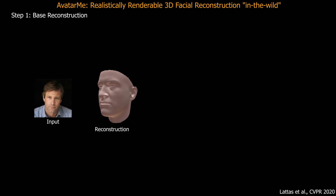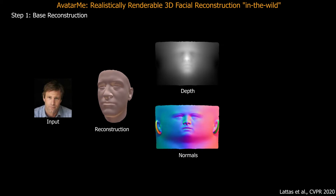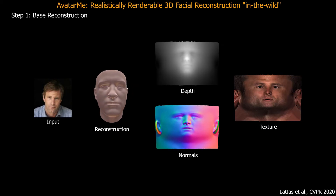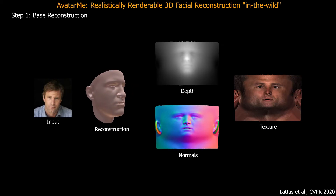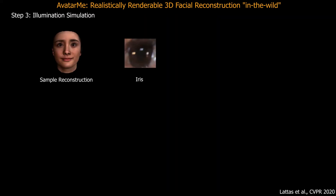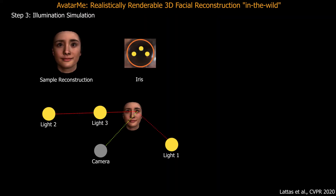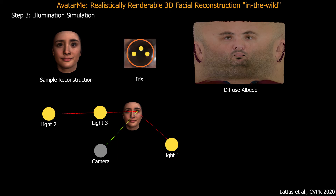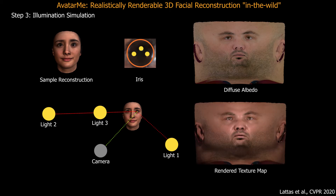During inference, we reconstruct a mesh and complete a texture from a single image. Then we perform super-resolution, trained with the captured data. We estimate the shading in the reconstructed samples and render similarly to the training data.